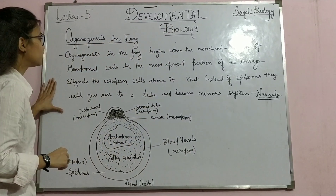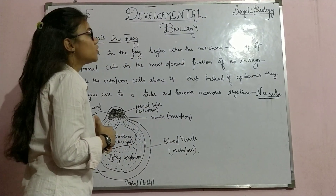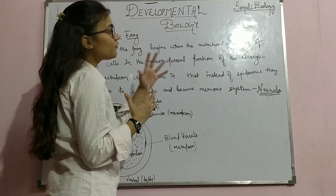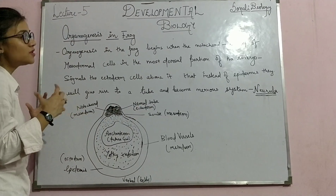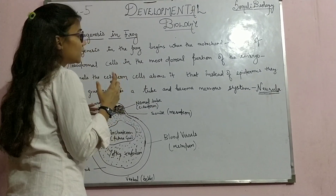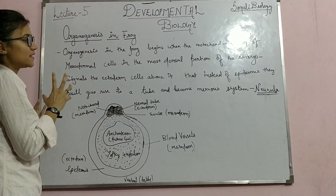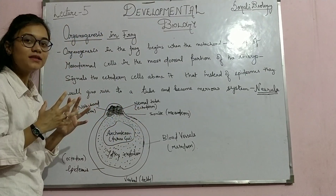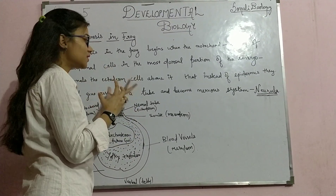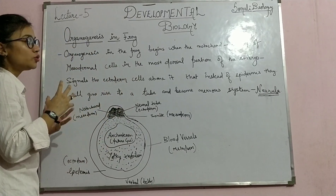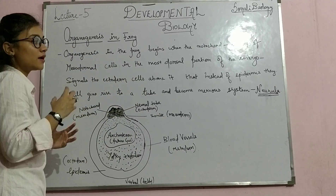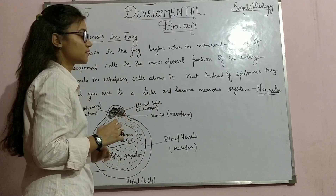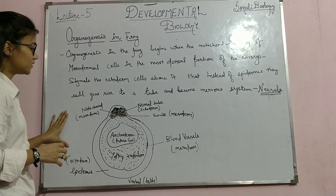Now we are going to cover the organogenesis process. Organogenesis begins with the formation of the notochord. A rod of mesodermal cells in the most dorsal portion of the embryo will signal the dorsal ectodermal cells to make a nervous system instead of epidermis. Here you can see this diagram.